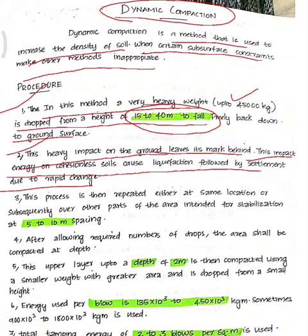This process is then repeated either at the same location or subsequently over other parts of the area intended for stabilization, at 5 to 10 meter spacing.